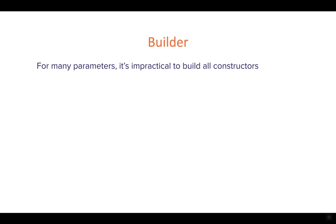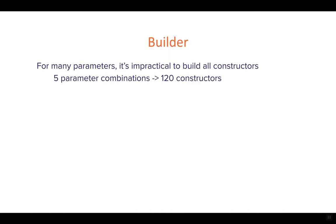The Builder pattern is implemented by few developers even though it's a very useful pattern. Basically, it is useful when we have many parameters in a class — when we need to instantiate a class with multiple parameters, some of which are optional. We don't have to build all the possible constructors. With five parameters, the combinations give you about 120 constructors, which is obviously impractical.